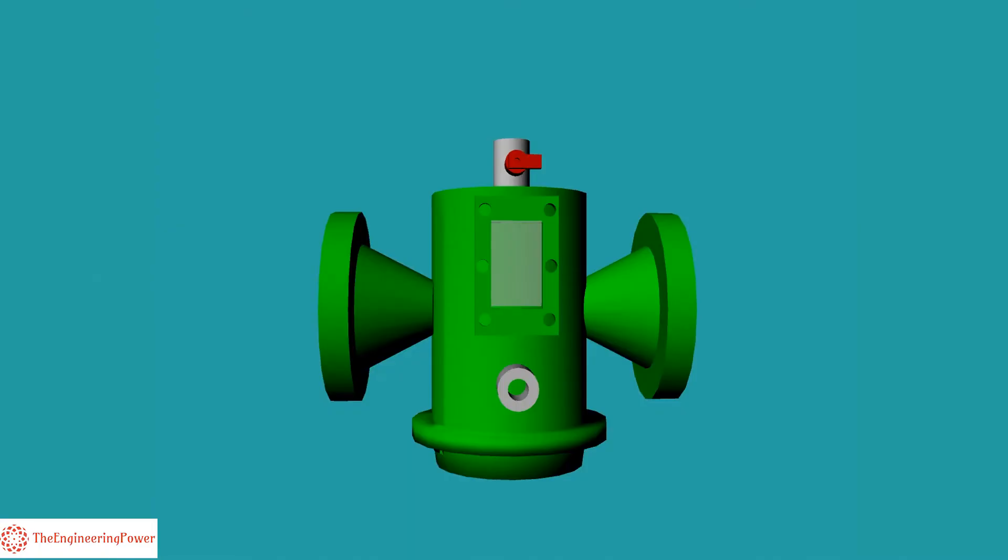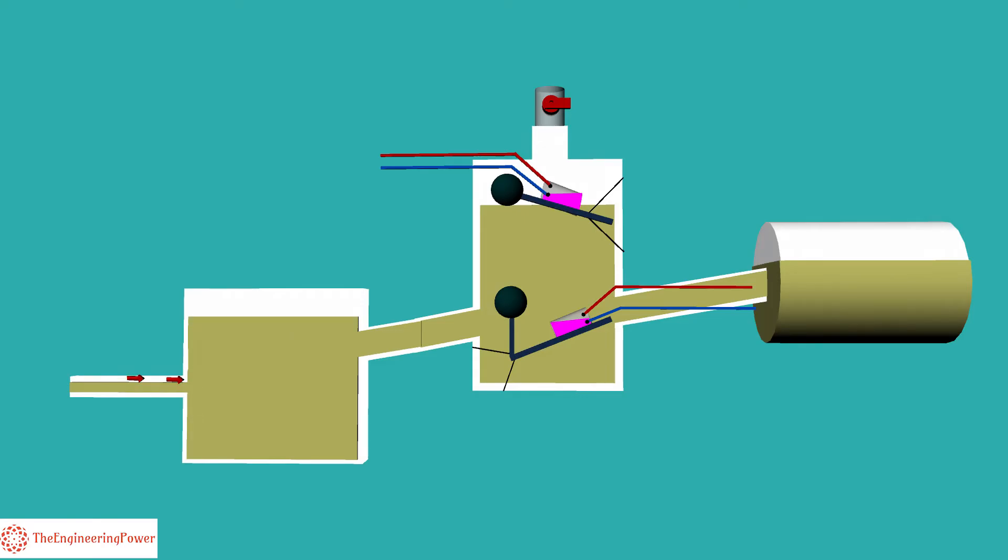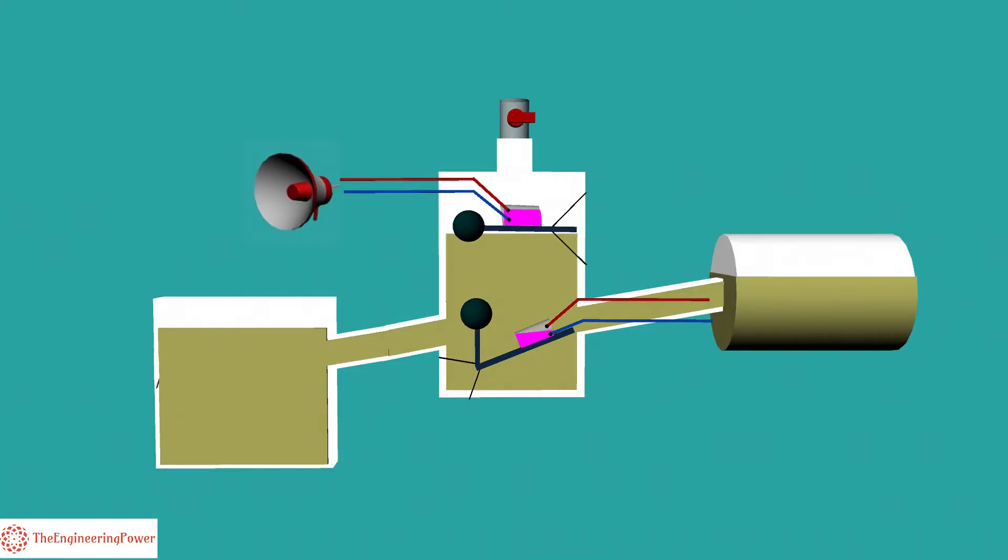In some cases, Buchholz relay may be operated even without any fault inside the transformer. We call it false operation of Buchholz relay. For example, when oil is added to a transformer, air can mix up with oil under the relay cover causing a dip in oil level and resulting in false Buchholz relay operation.